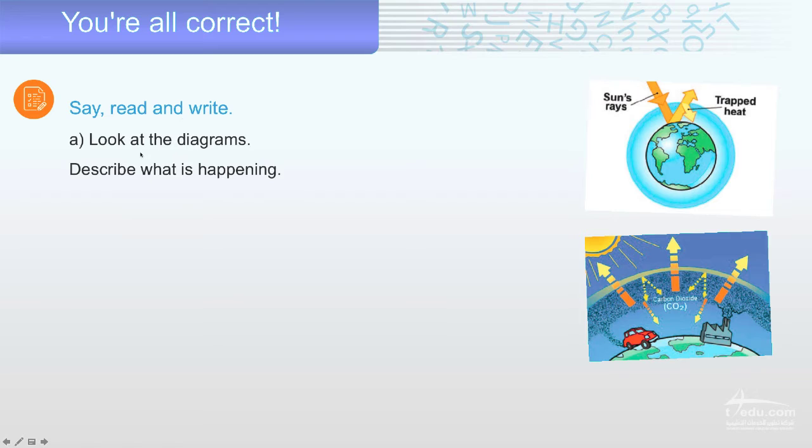Say, read and write. Look at the diagram. It's a diagram. It's explaining things. The picture that explains some information, very important information. Describe what is happening. What do you think? What is happening here and here? Let's think about it.